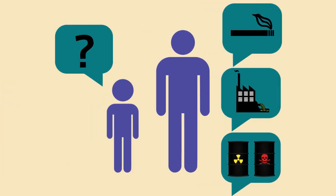We do not know the cause of cancer in children. Because the organs in a child's body grow rapidly, there is a greater chance of the multiplication of defective cells, and this may lead to cancer.